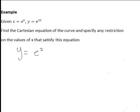By index laws e to the 2t is just e to the t squared. Therefore we could write here Y equals X squared for our Cartesian equation.